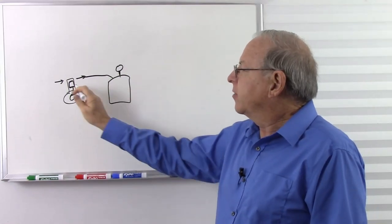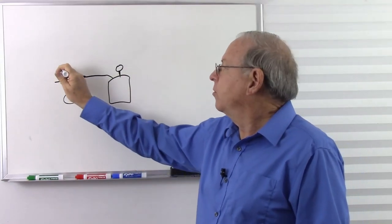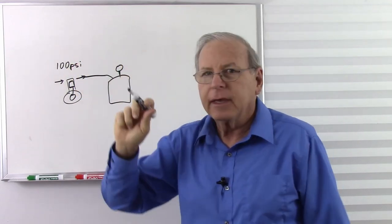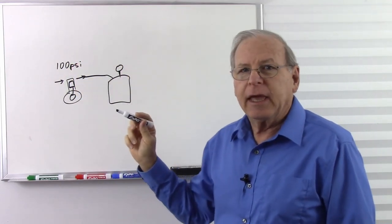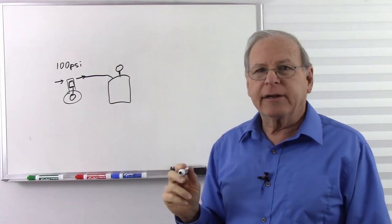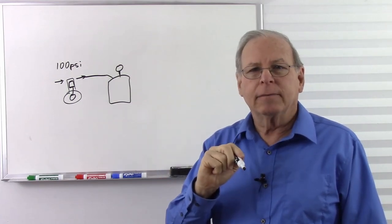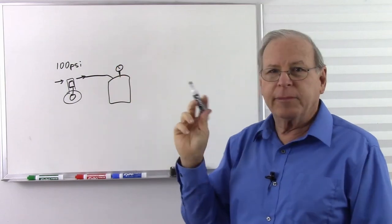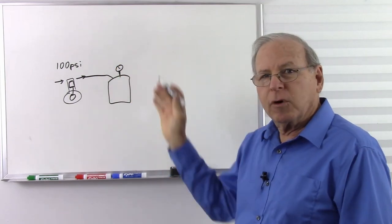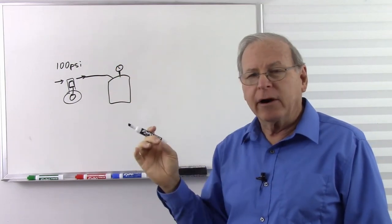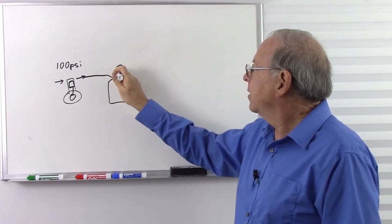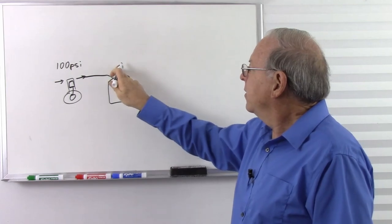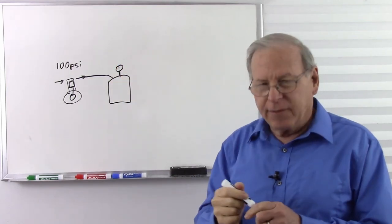Let's say this pump produces 100 pounds per square inch. We put a little air into that tank and we get a little bit of pressure — the pressure gauge goes up just a bit. We put more air in, we get more pressure. It goes up a bit more. We put more air in, we get more pressure. We can keep doing that.